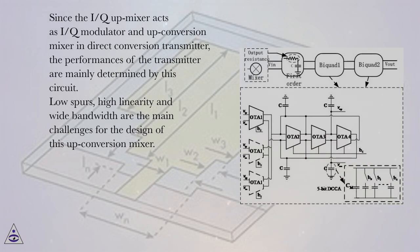Since the IQ up-mixer acts as IQ modulator and up-conversion mixer in direct conversion transmitter, the performances of the transmitter are mainly determined by this circuit. Low spurs, high linearity, and wide bandwidth are the main challenges for the design of this up-conversion mixer.